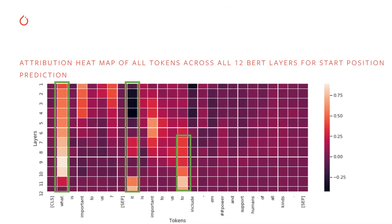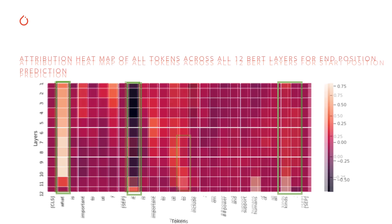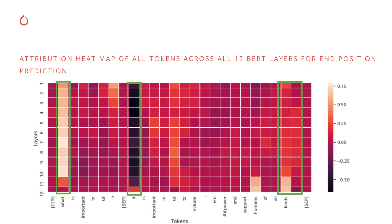This allows us to generate heat maps where each cell represents the accumulated importance score of a layer for a given input token for predicting the start position. The question token 'what' and answer token 'to' have high importance scores, with the answer token becoming especially important for the last three layers. For the end token position prediction, the question token 'what' is still very important, and the end token 'kinds' has a very high importance score, especially in the last two layers.